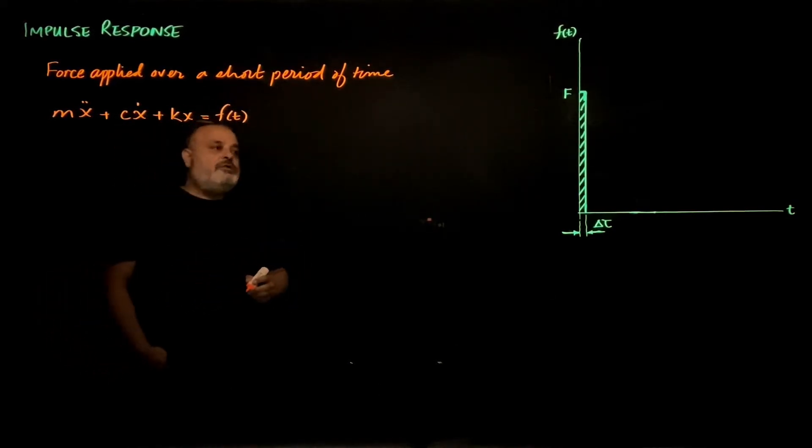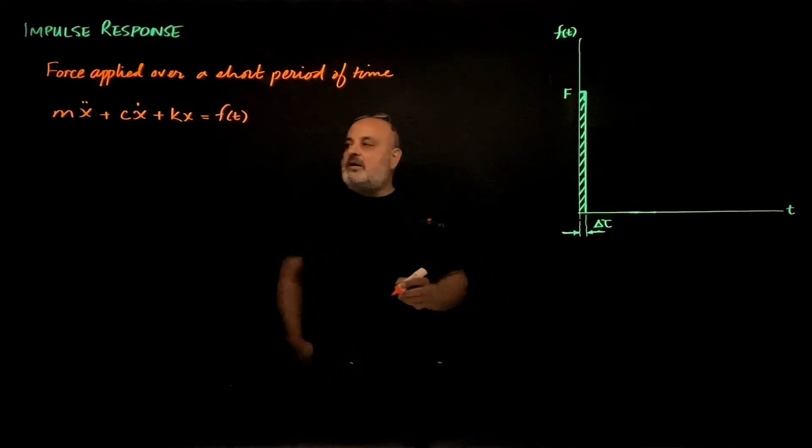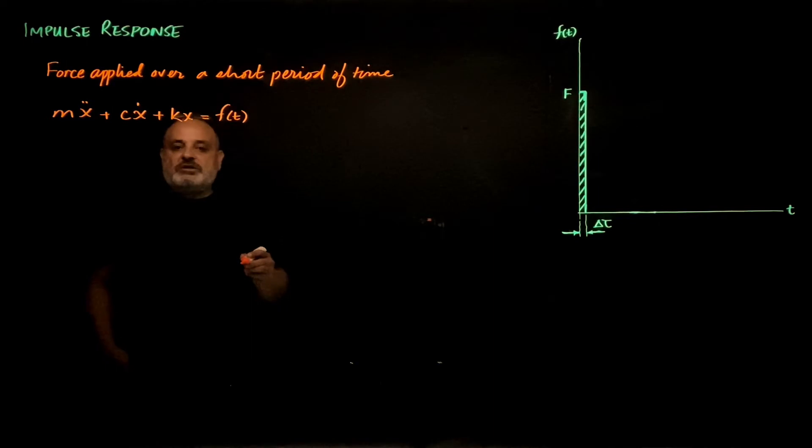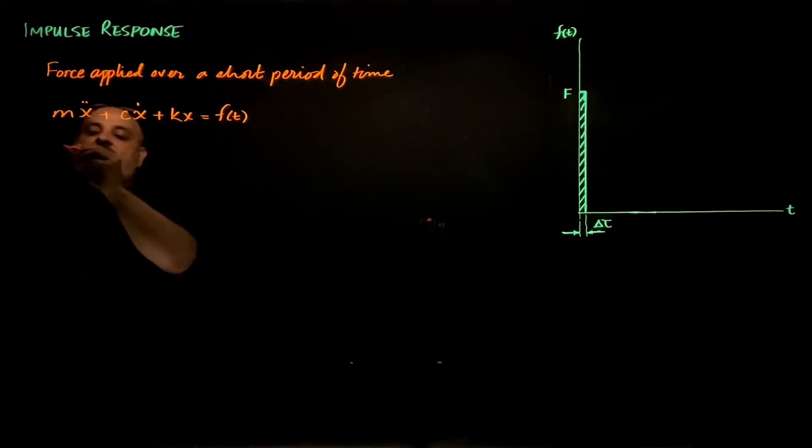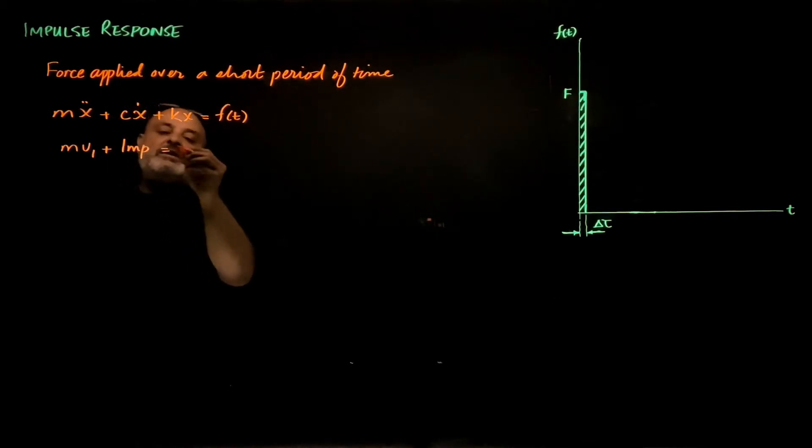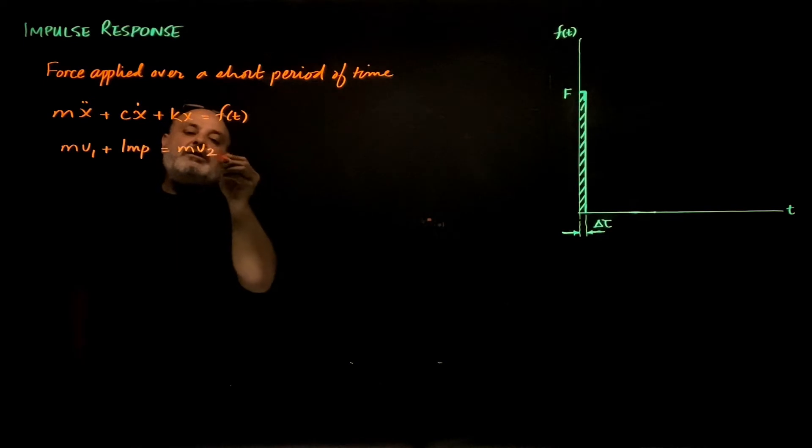Now according to Newton's second law, an impulse causes a change in linear momentum as mv1 plus an impulse equals mv2.